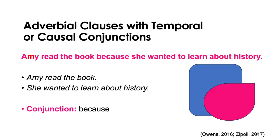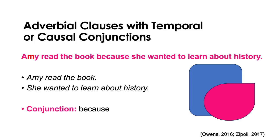An example of a sentence with a temporal or causal conjunction is: 'Amy read the book because she wanted to learn about history.' We have two simple sentences — 'Amy read the book' and 'she wanted to learn about history' — and we use subordination to turn the second into the subordinate clause. So 'Amy read the book' is your independent clause, and 'because she wanted to learn about history' is the dependent or subordinate clause that gives additional information about why.